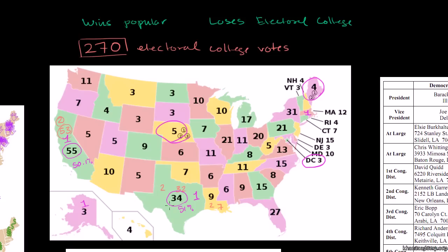Say there's a conservative candidate who gets 80% in Texas, 80% in Mississippi, 80% in Oklahoma — huge majorities in the states they win. But in the states they lose, they barely lose. In Florida, that candidate gets 49% of the vote — a lot of votes, but not enough to win — and the opponent gets 51%, so all 27 electoral votes go to the other candidate.